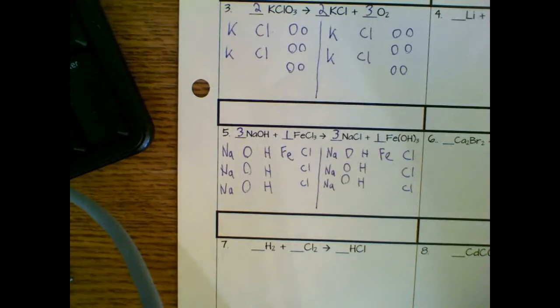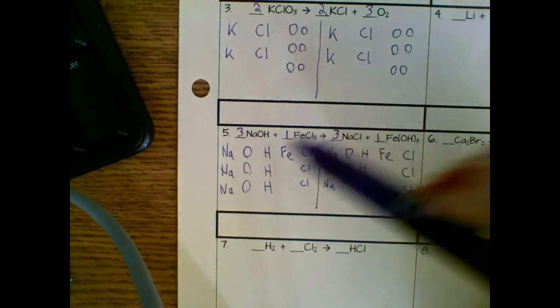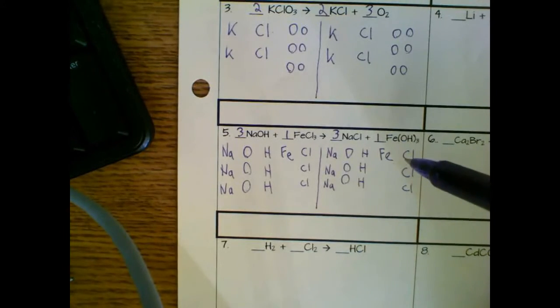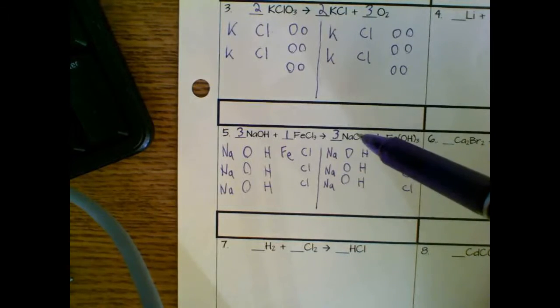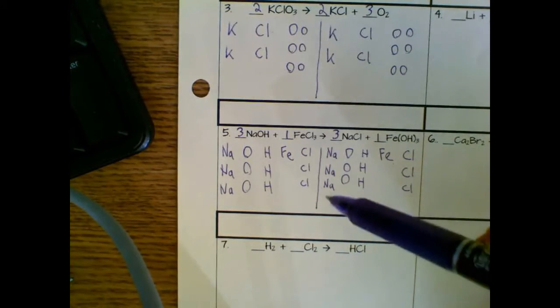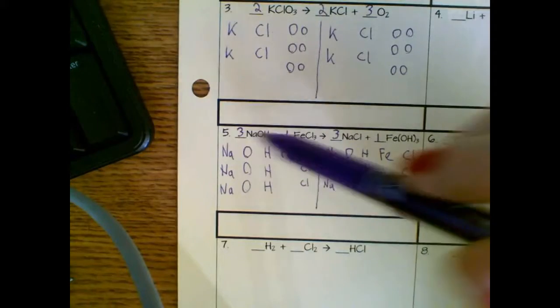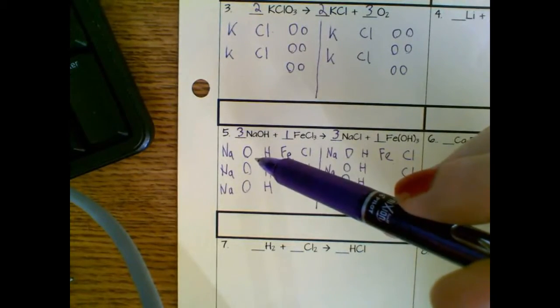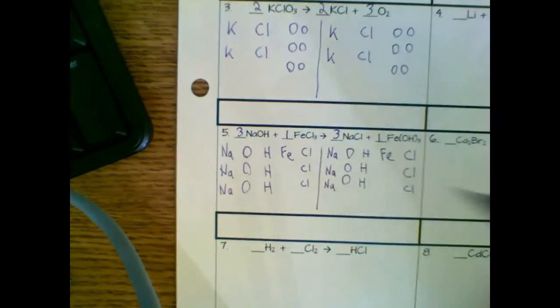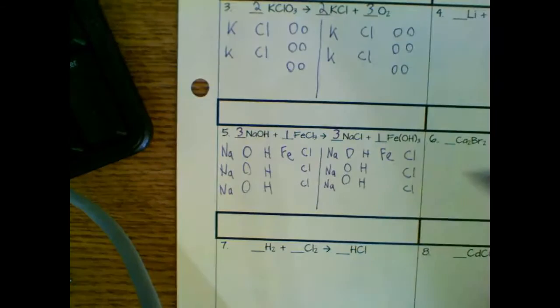So when you're going through this process, you want to try to pick the side that has too little of something, start putting in a number, rewrite your symbols, and then work back to the other side. If there's too little of something on this side, just kind of work your way back and forth. Sometimes it'll be a little bit more complicated, but that's the general process.